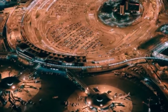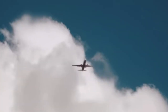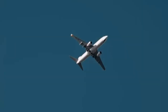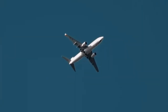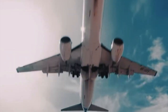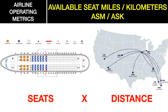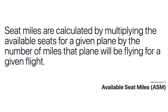Available Seat Kilometers captures the total flight passenger capacity of an airline. It is obtained by multiplying the total number of seats available for scheduled passenger services and the total number of kilometers those seats were flown. Airlines have to try to match supply with demand for the passengers' benefit.